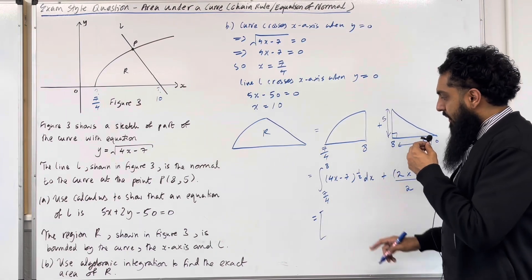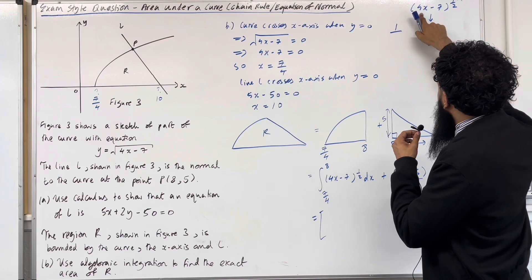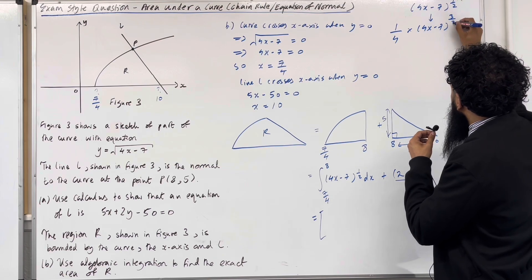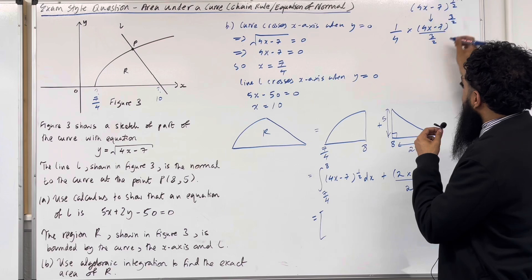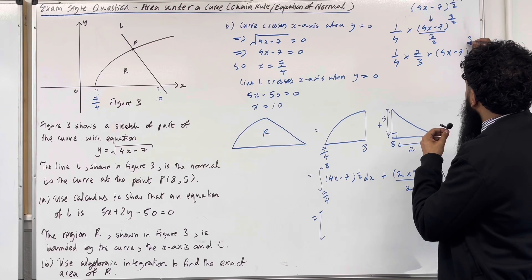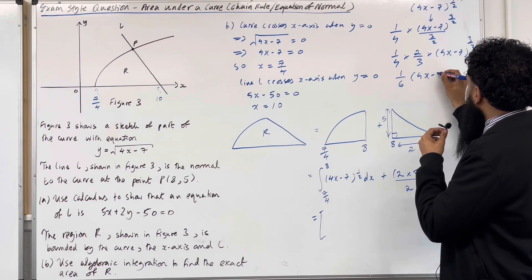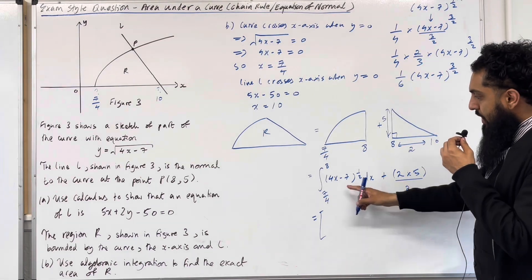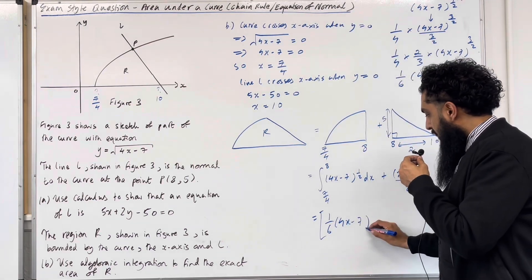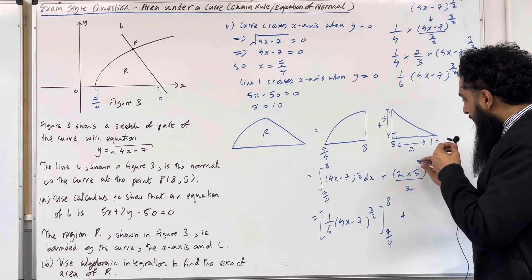To integrate (4x minus 7) to the power 1 half, we take out 1 over the coefficient of x, which is 4: giving 1 over 4 times (4x minus 7) to the power 3 over 2, divided by 3 over 2. This becomes 1 over 4 times 2 over 3 times (4x minus 7) to the power 3 over 2, which simplifies to 1 over 6 times (4x minus 7) to the power 3 over 2. We now evaluate this between the limits 7 over 4 and 8, then add 5 for the triangle.